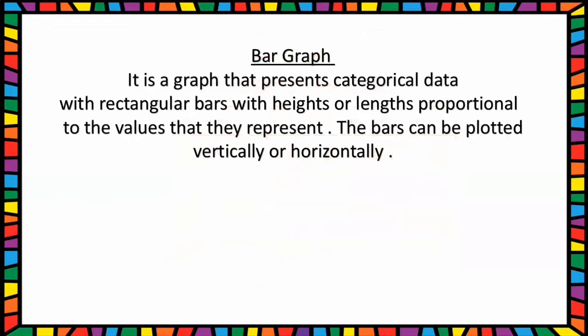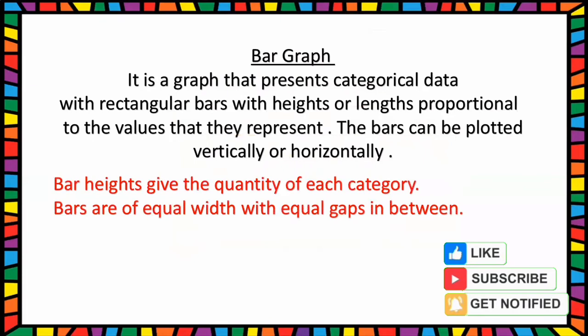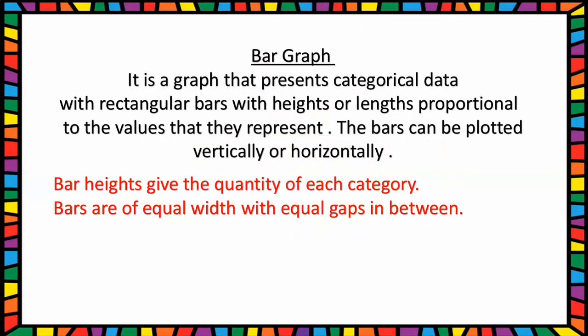Next one, Bar graph. It is a graph that represents categorical data with rectangular bars with heights or lengths proportionate to the values that they represent. The bars can be plotted vertically or horizontally. Bar heights give the quantity of each category. Bars are of equal width with equal gaps in between.